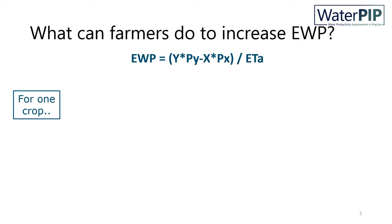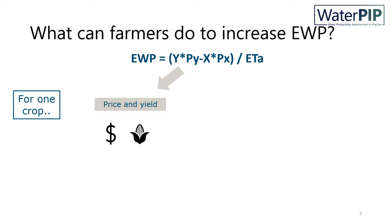As the formula for economic water productivity shows, it is influenced by price multiplied by yield, production costs, and water consumed. Looking at one crop, farmers have an influence on yield and price. For instance, market prices may fluctuate, and when farmers have the ability to sell their harvest when prices are high, they will achieve higher economic water productivity.